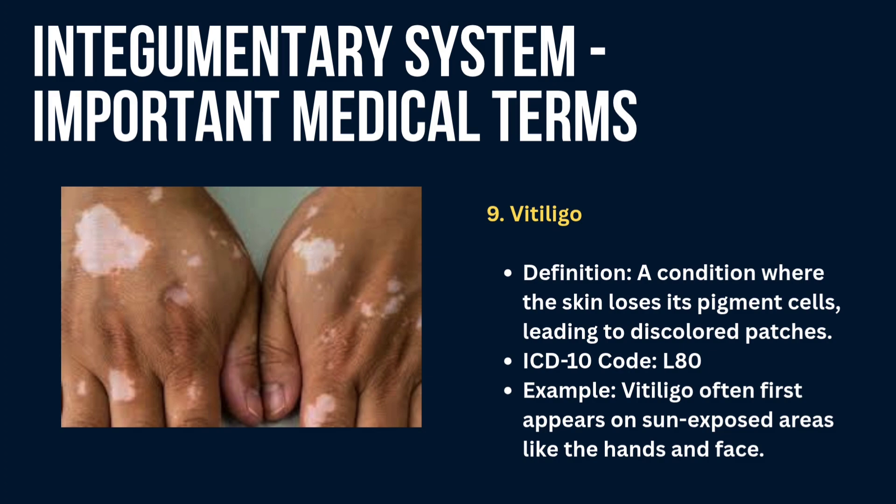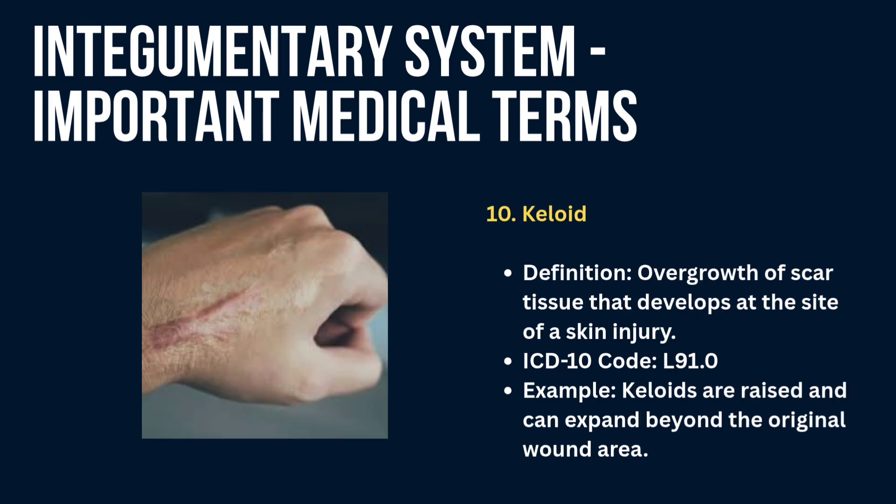Always relate the condition to the picture so that you won't forget it. Next is keloid — an overgrowth of scar tissue that develops at the site of a skin injury. Example: keloids are raised and can expand beyond the original wound area.